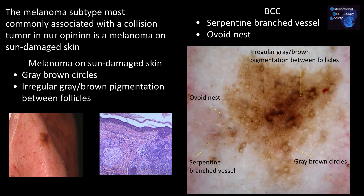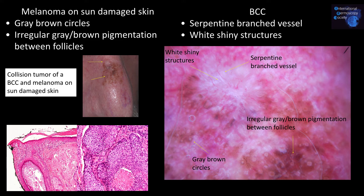The melanoma subtype most commonly associated with the collision tumor, in our opinion, is a melanoma on sun-damaged skin. Here we see the melanoma characterized by gray-brown circles and irregular gray-brown pigmentation between follicles, and the basal cell carcinoma characterized by serpentine branched vessels and ovoid nest. In another example, we also see a melanoma on sun-damaged skin in association with a basal cell carcinoma, where the BCC is characterized by serpentine branched vessels and white shiny structures.